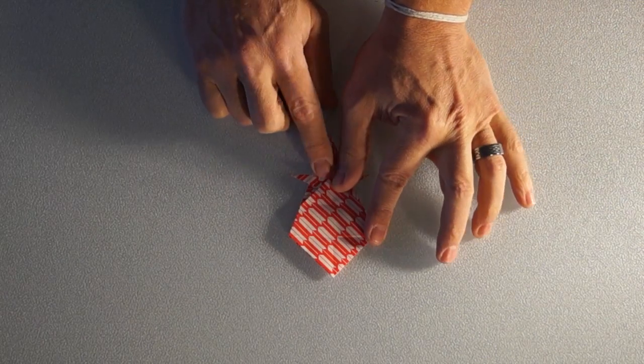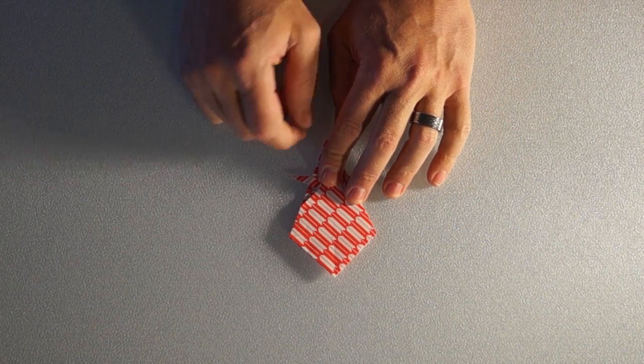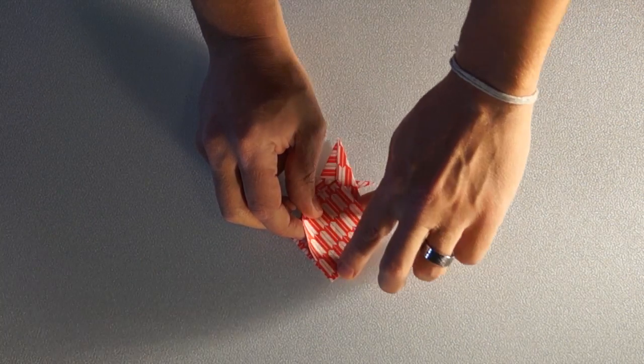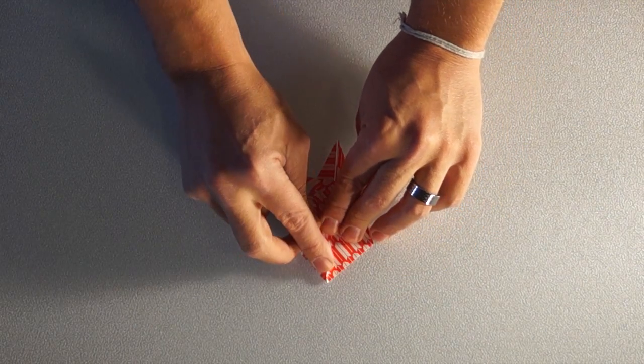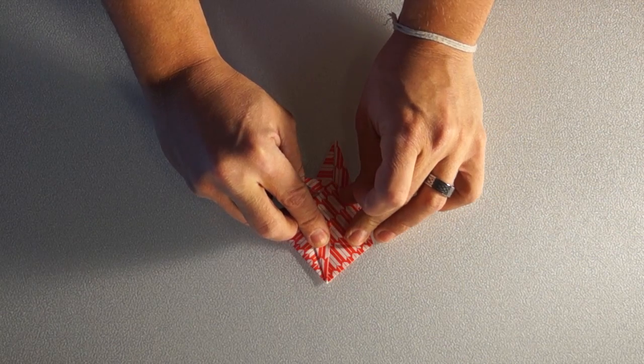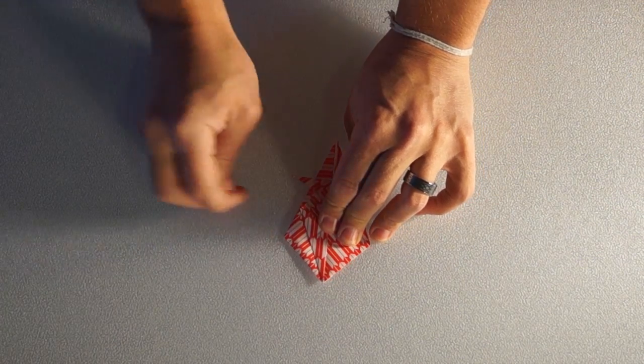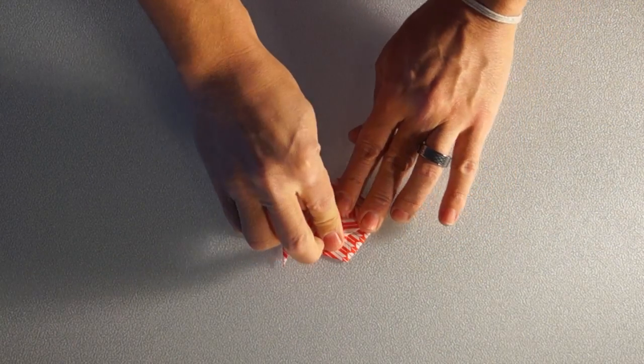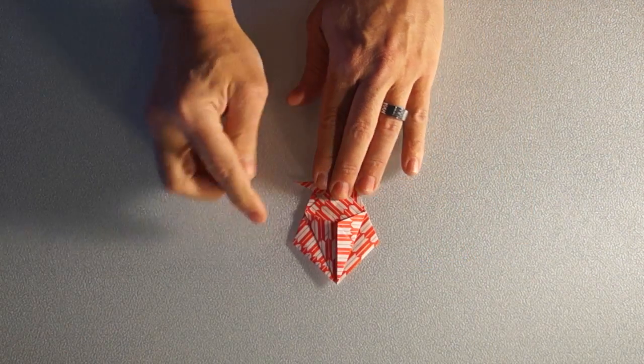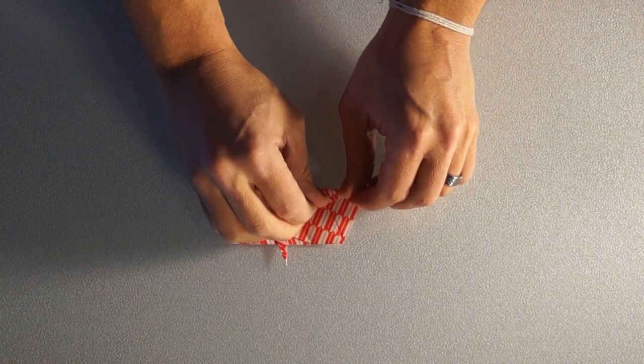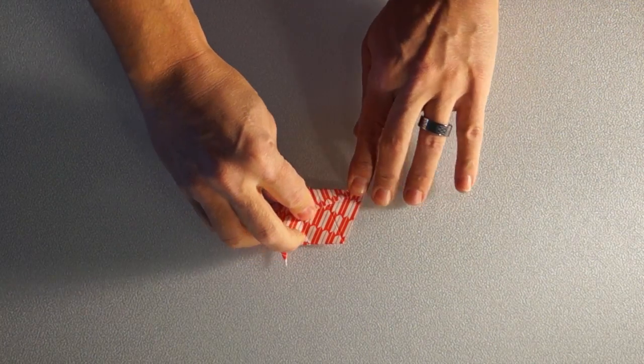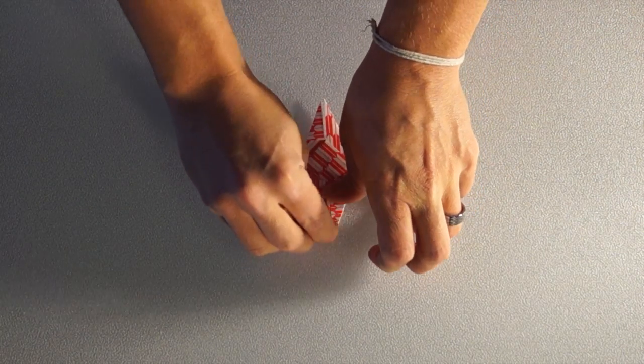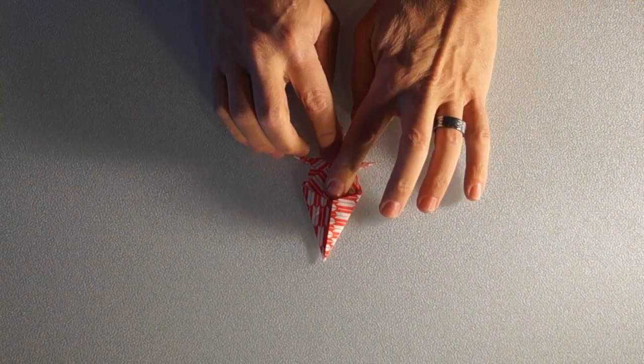Now what we're going to do is very similar to the first folds we did once we had our preliminary base. I'm going to take this tip here and I'm going to fold this side right to the center line. And do the same thing with the other side. And then I'm going to flip it over. I'm going to flip it over and do the same thing on the other side as well. Both right and left sides of this side. And this is what I have up to this point.